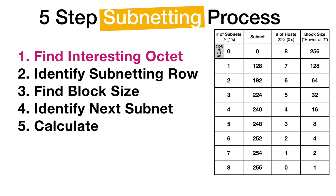Usually when you're presented with an IP address, you don't know where to start. Well, there are actually five steps you need. If you take them in order and move step-by-step, before you know it you've figured out the subnetting question. It's important that you use the subnetting cheat sheet — it's just four columns. The first thing you need to do is find the interesting octet.